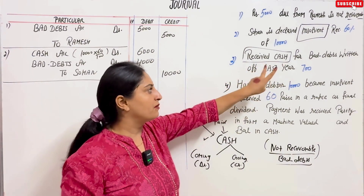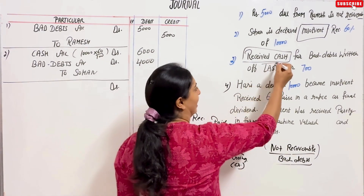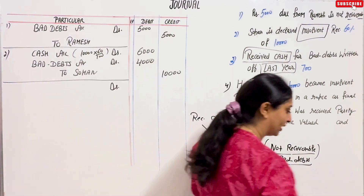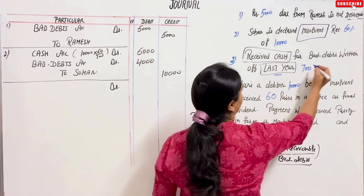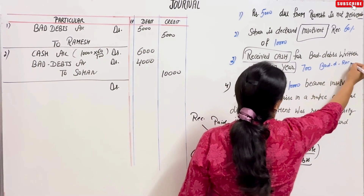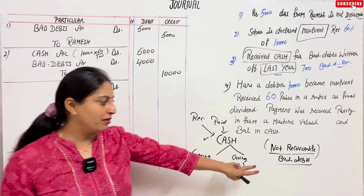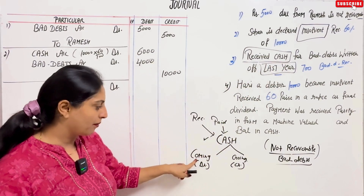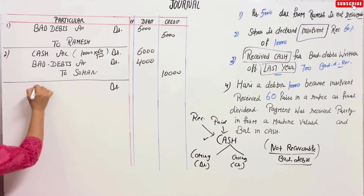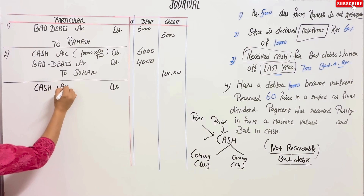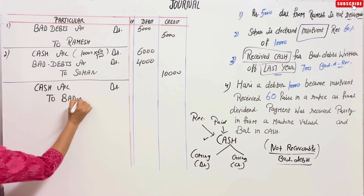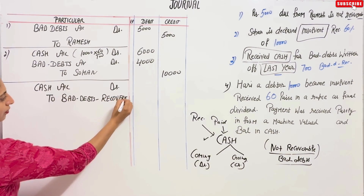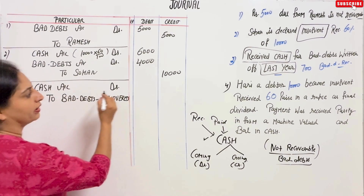Next entry: received cash for bad debts written off last year. When bad debts from a previous year are recovered, it is called 'bad debts recovered.' Cash is coming, so cash account is debited. Credit goes to bad debts recovered. This is our third entry — amount Rs. 700.